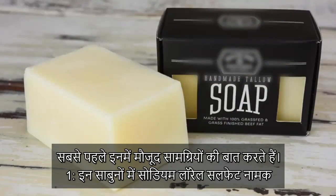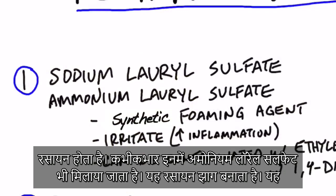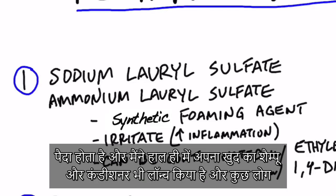Let's talk about the ingredients. Number one, you have this chemical called sodium lauryl sulfate. Sometimes they'll use ammonium lauryl sulfate too, and this is the lathering agent. It's in your shampoos, it's in your cleansers, it's in your body washes — it's the thing that makes that lathering effect.